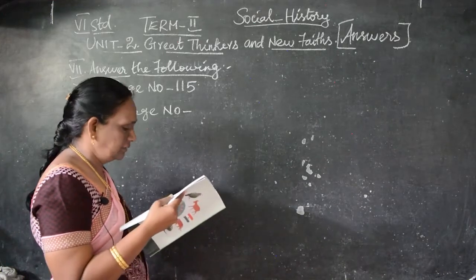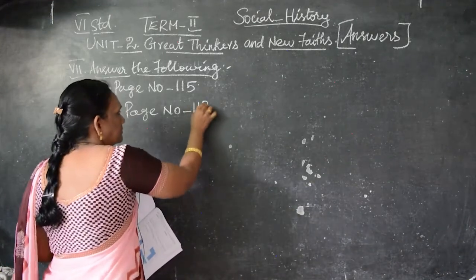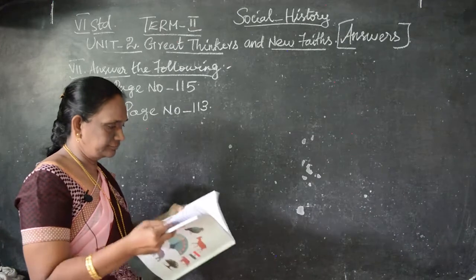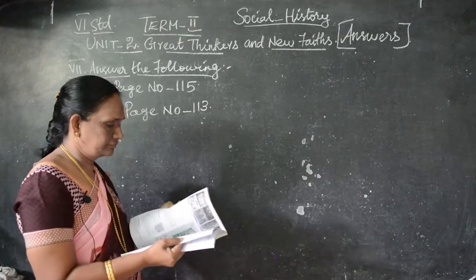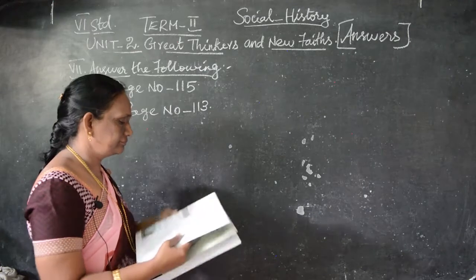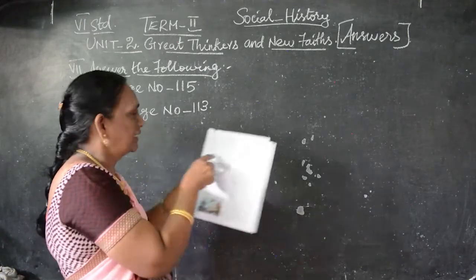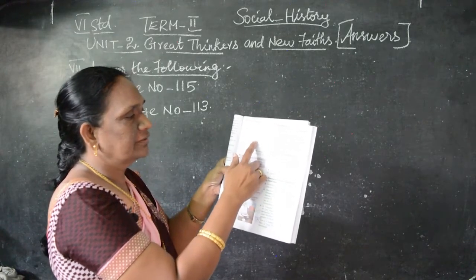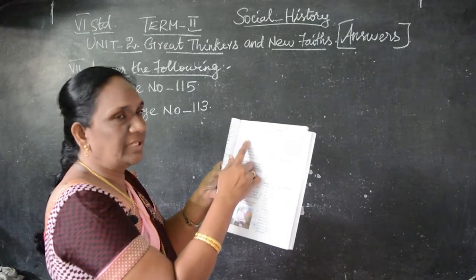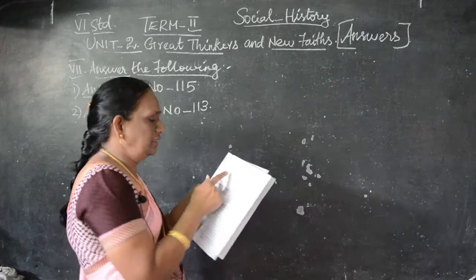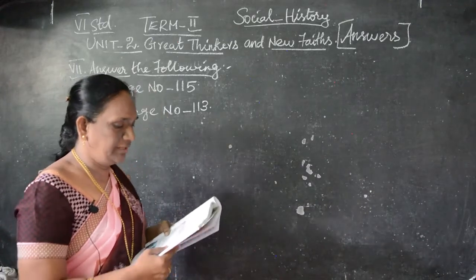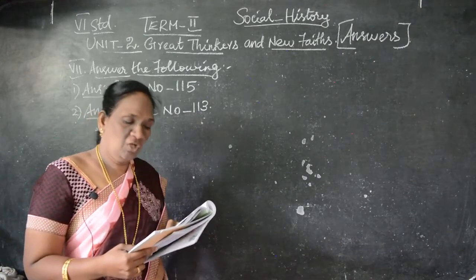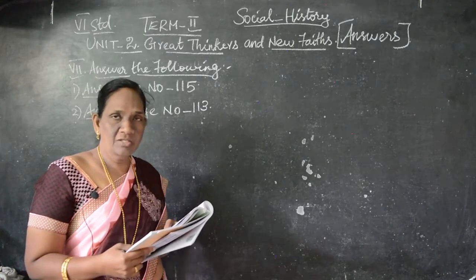It is on page number 113. Here is the Jain code of conduct. From that you have to write: Ahimsa — not to injure any living beings. Second, Satya — to speak truth. Third, Asteya — not to steal. Fourth, Aparigraha — not to own property.